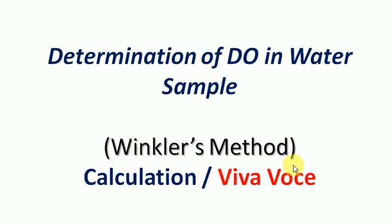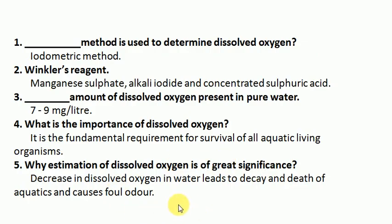Now for viva questions. Question 1: What method is used to determine dissolved oxygen? This is an iodometric method. Question 2: What are the Winkler's reagents? Manganese sulfate, alkaline iodide, and concentrated sulfuric acid — these together form Winkler's reagent.